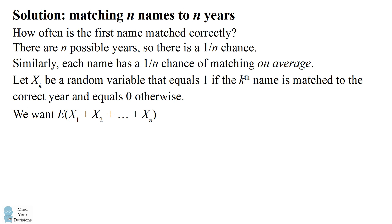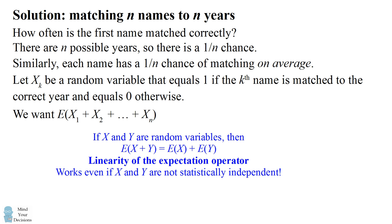Now the key is that the expectation operator has a special property. If you have two random variables, then the expectation of x plus y is equal to the expectation of x plus the expectation of y. This is known as the linearity of the expectation operator. And what's very important to us is that it works even if x and y are not statistically independent.